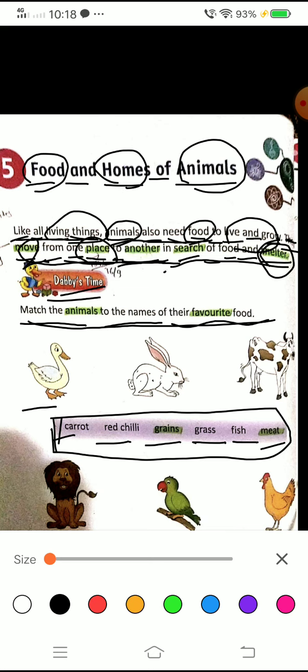Who is this? Correct, dog. So tell me, dog likes what? What is the favorite food of dog? Carrot does dog eat? No. Red chili? No. Grains? No. Grass? No. Dog eats fish. Fish is the favorite food of dog.